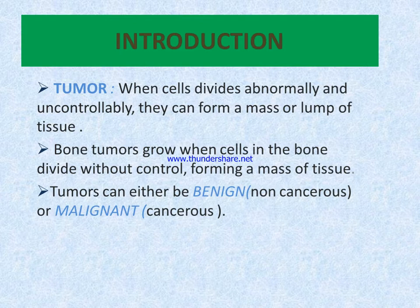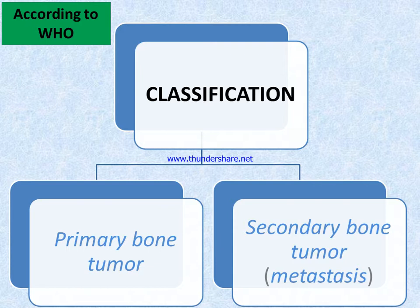Bone tumors can be either benign or malignant. Benign is also called non-cancerous, and malignant is cancerous. According to the WHO (World Health Organization), bone tumors are classified into two types: primary bone tumor and secondary bone tumor.